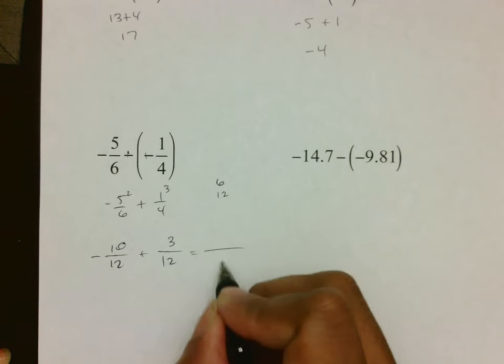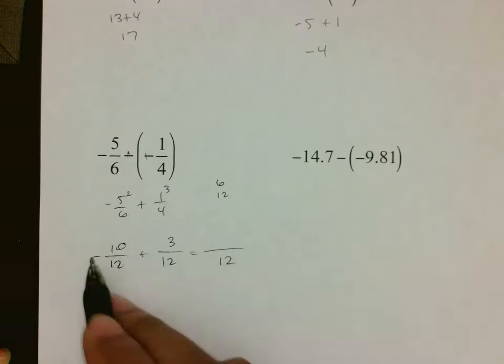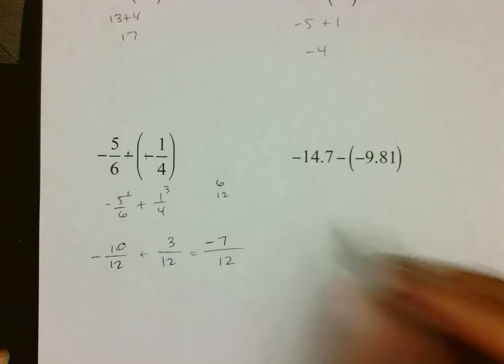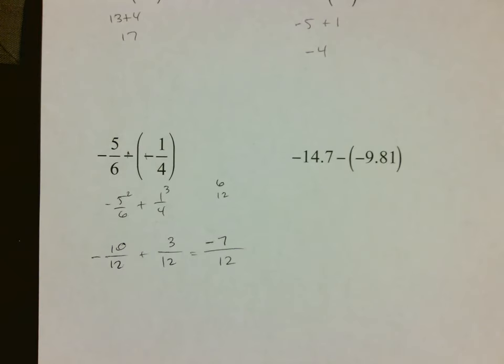And then now we do, remember whenever you add, the denominator stays the same. Negative 10 plus 3, they're two different signs, so we end up with 7 because we subtract. And then because 10 is bigger, the negative is bigger, it would be negative 7 twelfths.